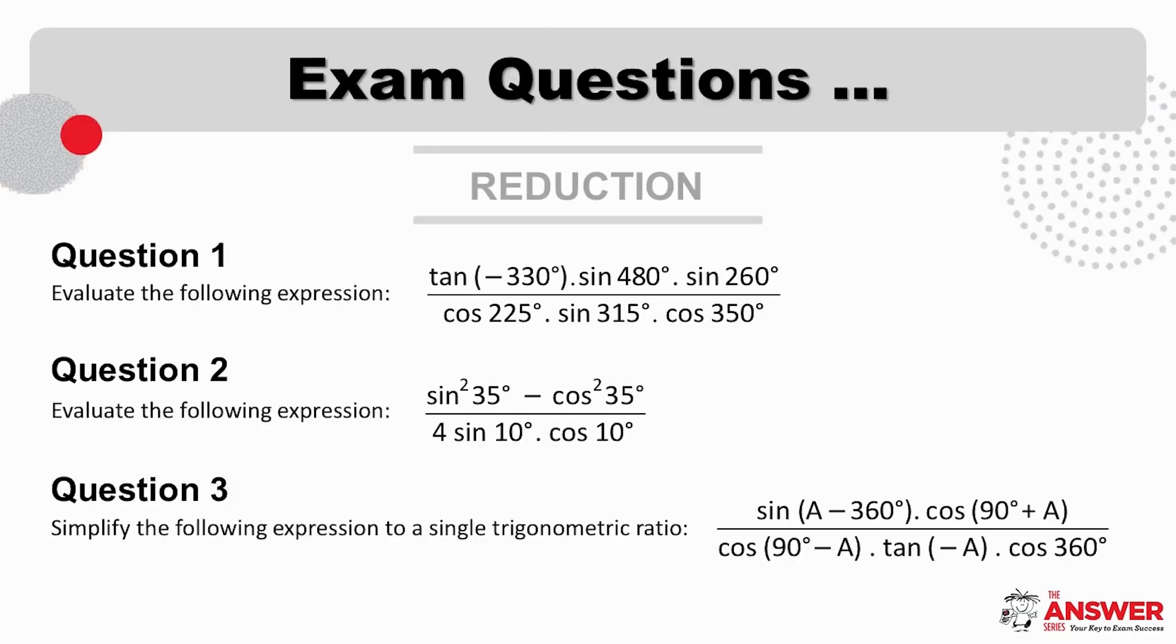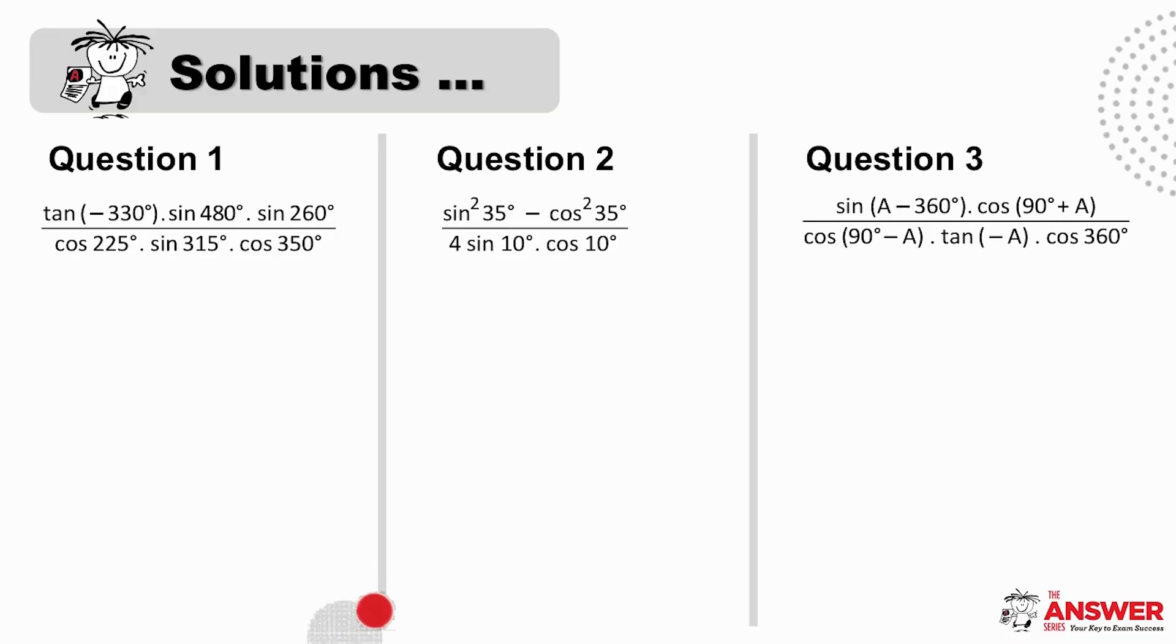Next up we have three questions on reduction. Pause the video here to give these a go. You may have noticed that the first two examples were reduction questions with angles as numerical values, and the third example with angles containing the unknown a. Remember for these reduction questions, take each factor one at a time, and for each remember the double thinking process necessary: first to find the acute or reference angle, and then to figure out the sign by considering which quad the angle is in.